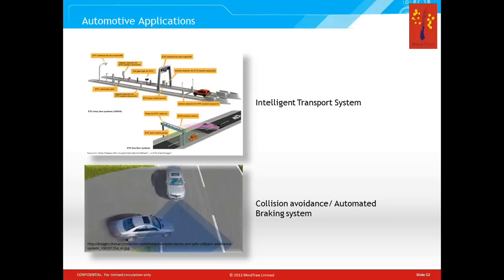Other applications include intelligent transport systems. On a highway, for example, vehicles can interact and communicate with each other. Sensors along the road can read the traffic situation and detect problems like accidents. Toll collection is already being automated. The advantage of networking things in this way is that you can have a much larger traffic density on the same roads.